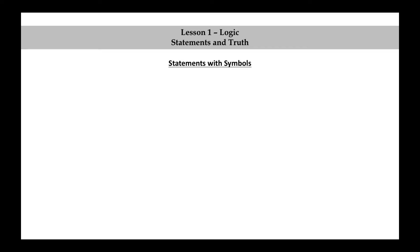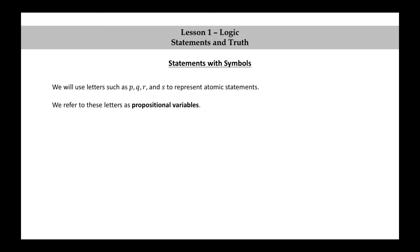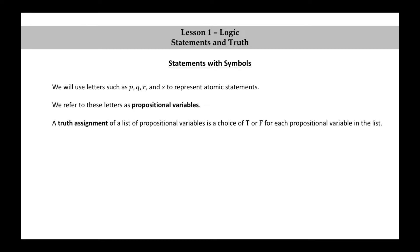Statements with symbols. We will use letters such as P, Q, R, and S to represent atomic statements. We refer to these letters as propositional variables. A truth assignment of a list of propositional variables is a choice of T or F for each propositional variable in the list.